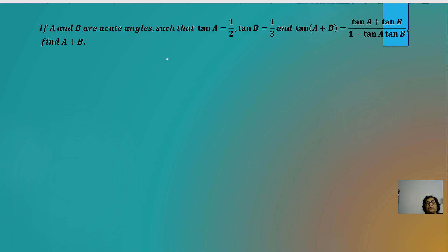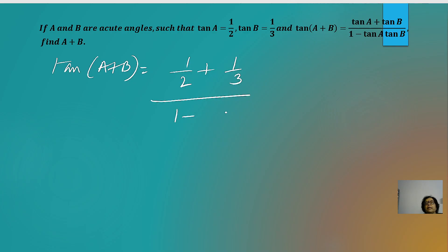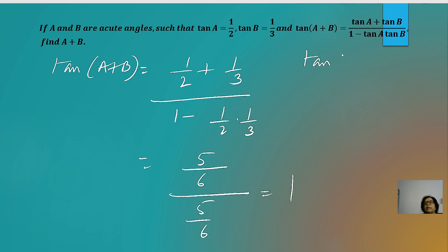Next: A and B are acute angles with tan A = 1/2 and tan B = 1/3. Using the formula tan(A+B) = (tan A + tan B)/(1 − tan A·tan B), substituting gives (1/2 + 1/3)/(1 − 1/6) = (5/6)/(5/6) = 1. So tan(A+B) = 1 = tan 45°, therefore A+B = 45°.